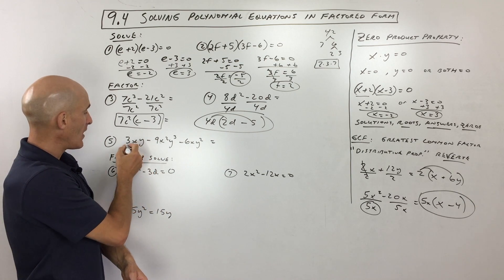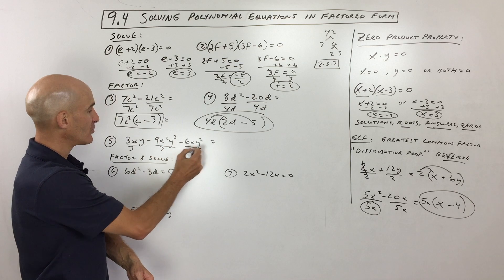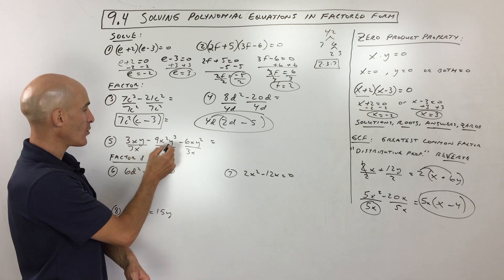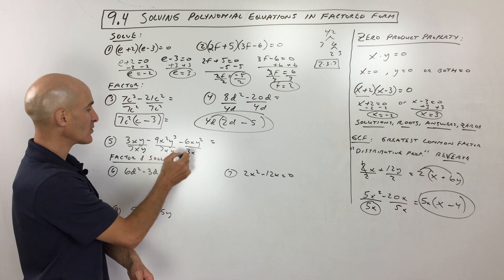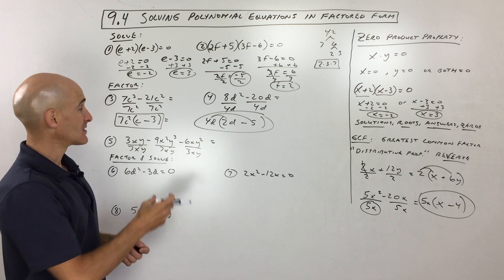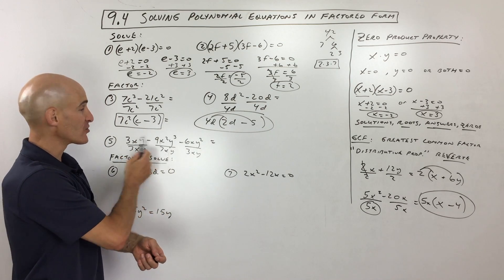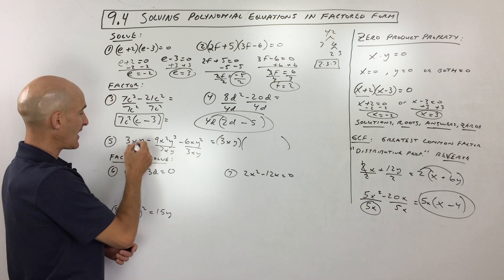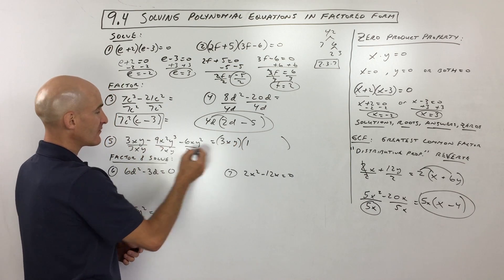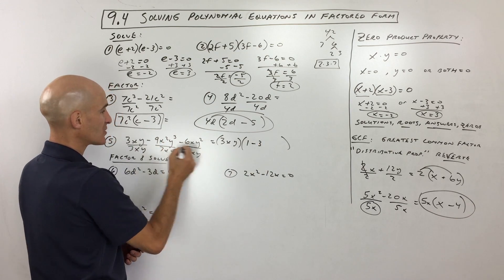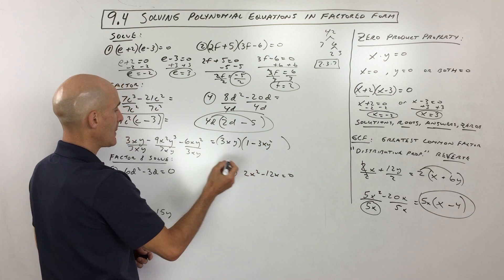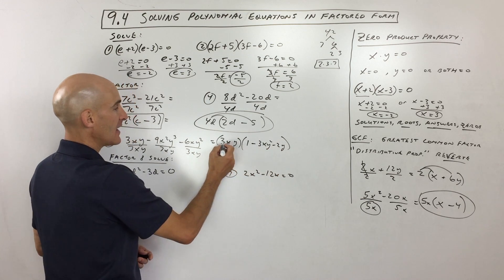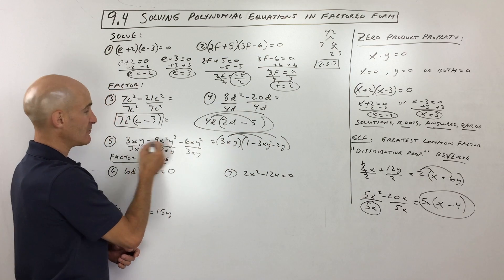Number 5 is a trinomial — three terms — and it has two variables, x and y. Same process though. For 3x squared y minus 9xy cubed minus 6xy squared, all three terms are divisible by 3, and they all have at least 1x and at least 1y. So we factor out 3xy. Dividing: 3xy divided by 3xy is 1; 9 divided by 3 is 3, leaving xy squared; 6 divided by 3 is 2, leaving y. So it's 3xy times (1 minus 3xy squared minus 2y). If unsure, distribute to verify you get back the original.